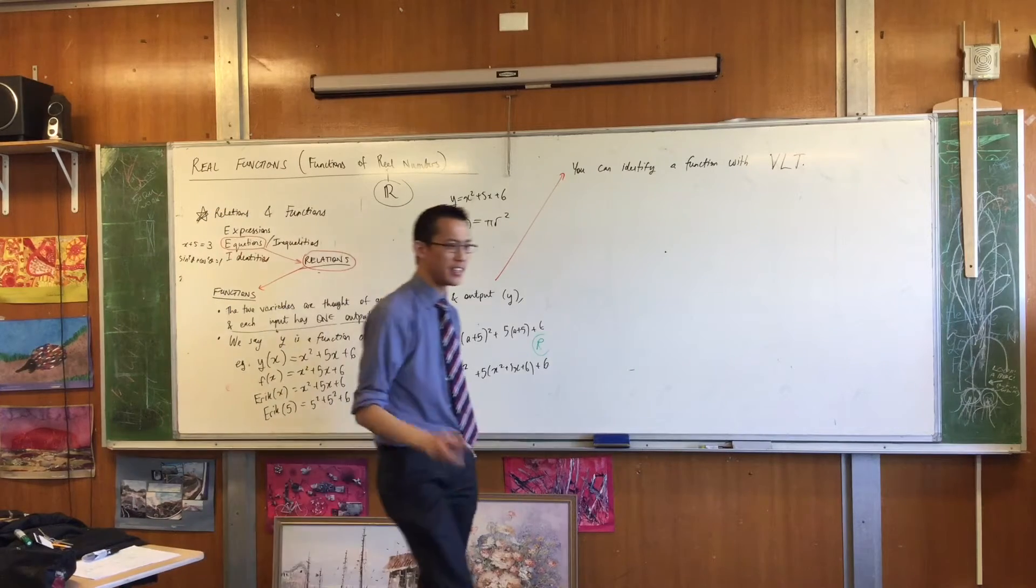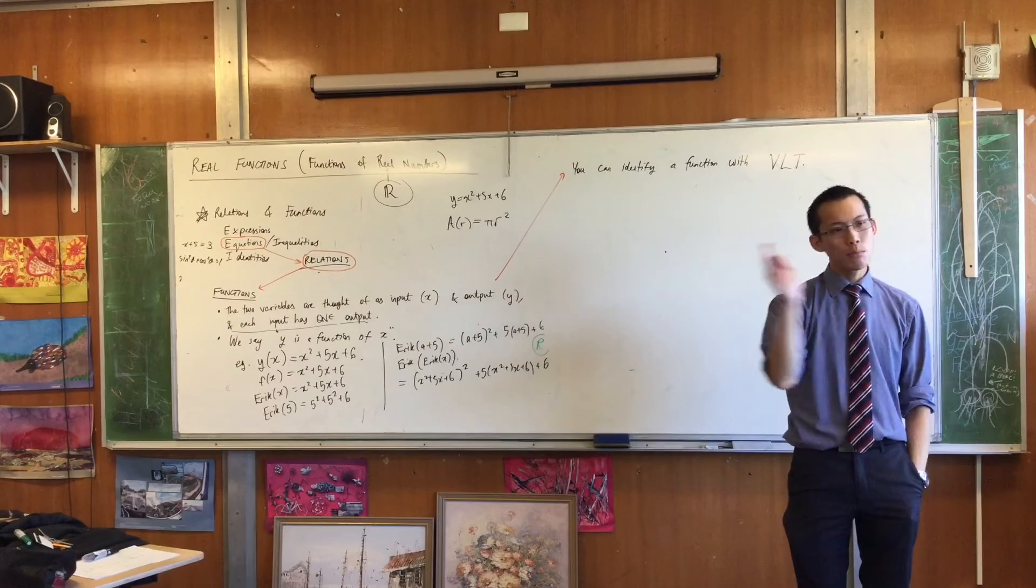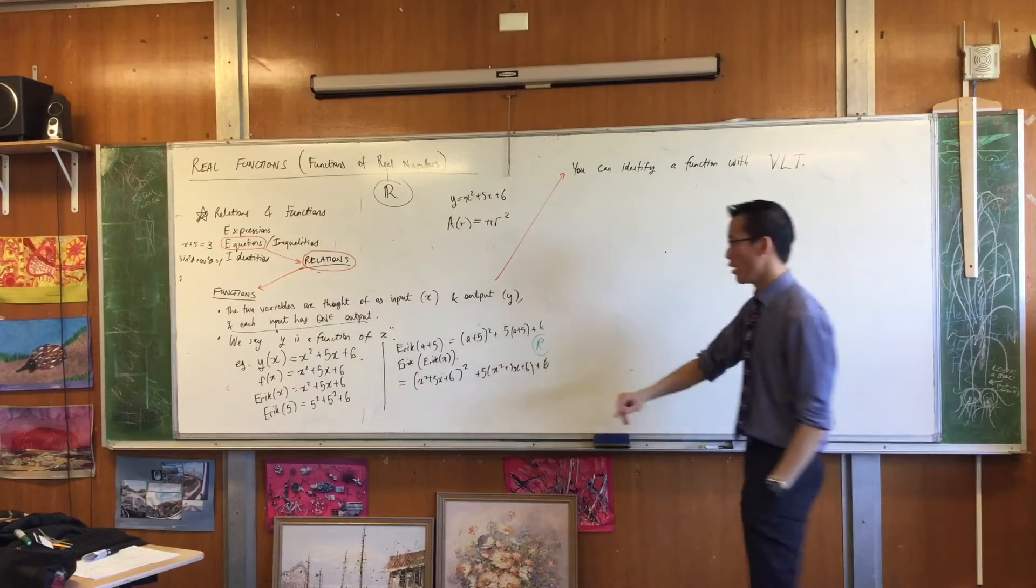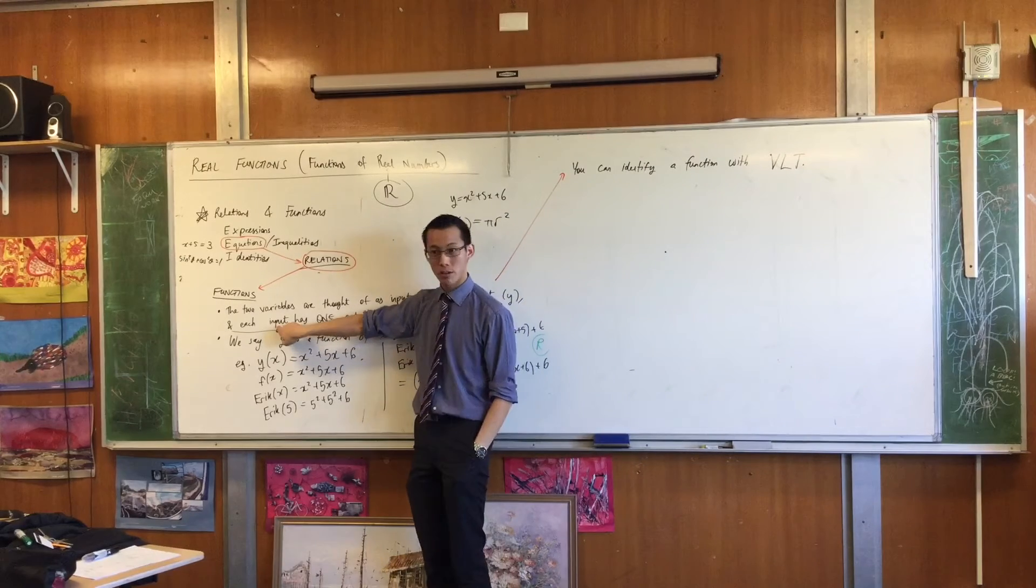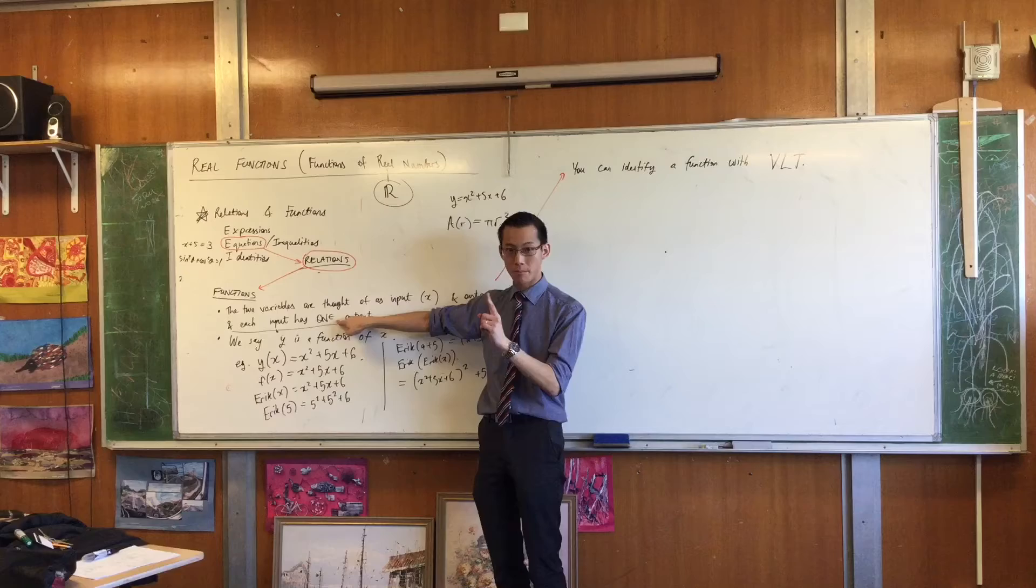All the vertical line test is, you take a vertical line and you place it across your relation, okay? If you can move it anywhere on your relation, which corresponds to any input, then you should have exactly one output and only one output, maximum, right?